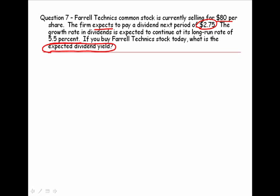So let's start with our formula: R equals D1 over P plus G. Now please look at what the question really is. It's the expected dividend yield, which is only this portion of our equation.